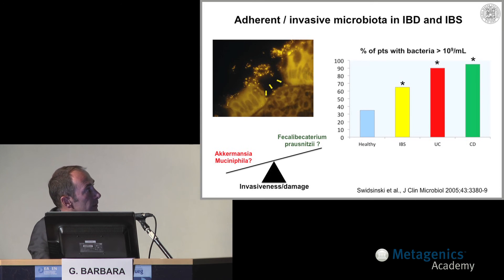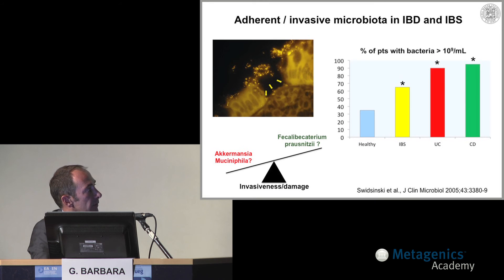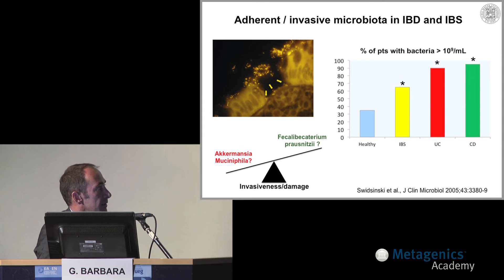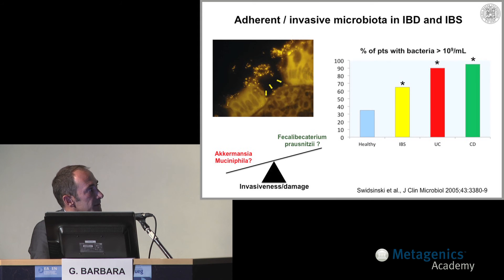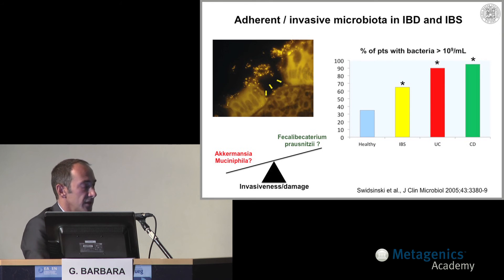Another very important factor in this permeability scenario is the microbiota. Certain species are important in increasing permeability, such as Akkermansia muciniphila — a champion in degrading mucus, thus enabling the invasiveness of other bacteria such as Faecalibacterium prausnitzii, which can then gain access to the mucosa. Data indicate that in IBS, and in IBD in particular, the number of microbial cells that closely adhere to epithelial cells is increased compared to controls.